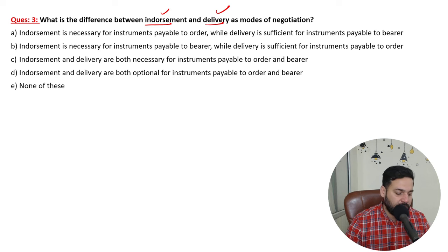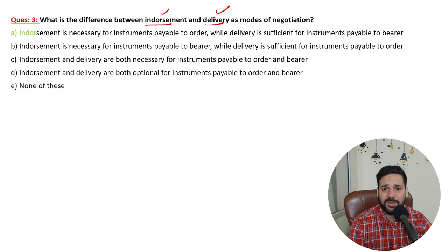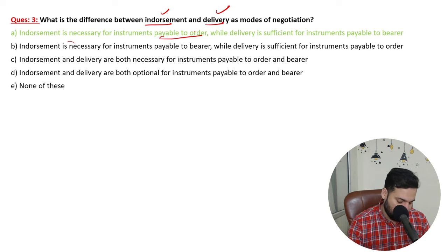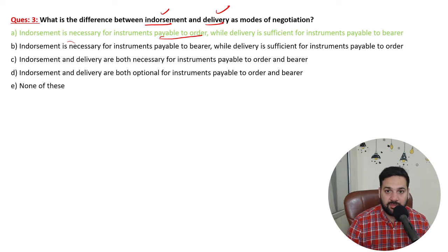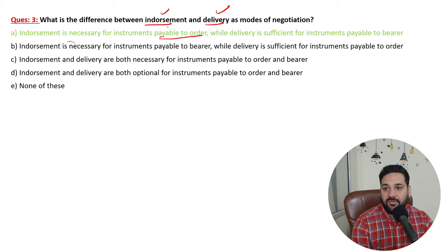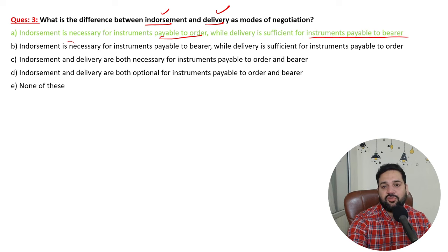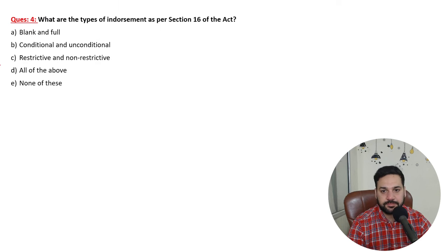In case of delivery, you are just handing over the instrument. But endorsement is different — endorsement is necessary for instruments payable to order. If it's an account payee check or an order instrument, a signature is required. If the instrument is not payable to bearer, endorsement is required. Delivery is sufficient for instruments payable to bearer — a bearer check can be cashed by anybody. Endorsement is required for instruments payable to order as per Sections 47 and 48.